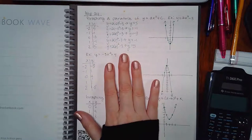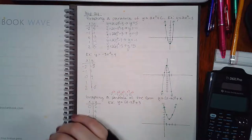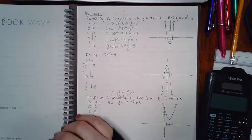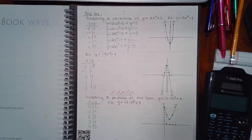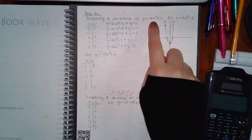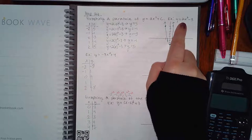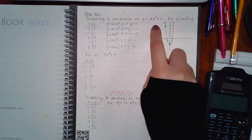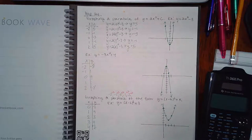This is a re-record of module 24 part 1. A couple of videos did not upload or download properly, so I'm going back to redo a few of them. This first module is where they start to talk about graphing, and the first topic is graphing a parabola of the form y equals ax squared plus c. My example is to graph this equation, which follows the form described in the topic title.